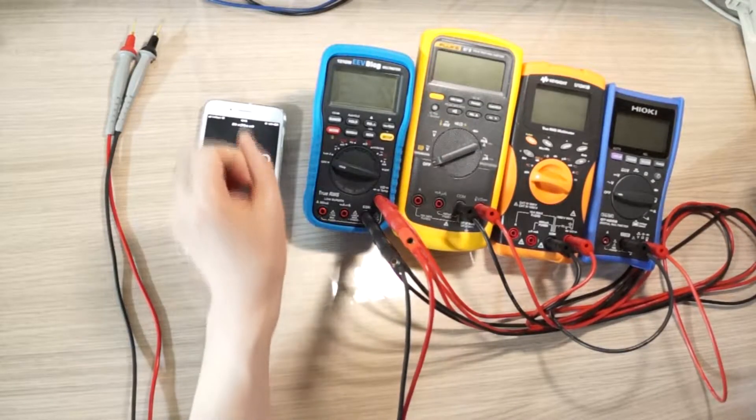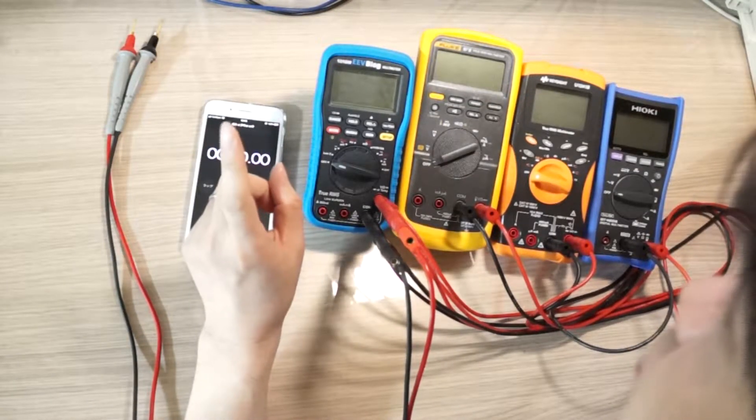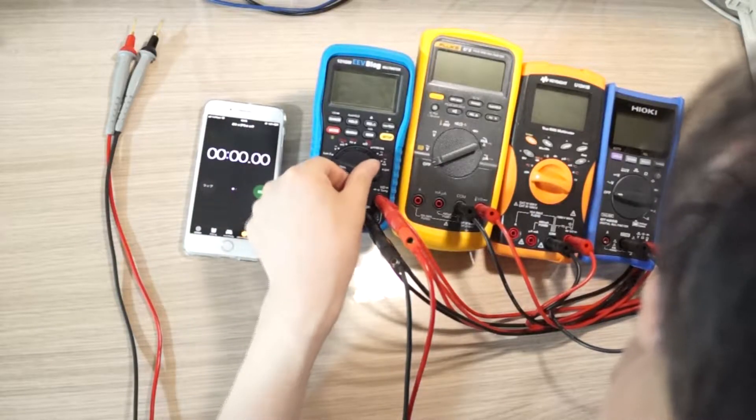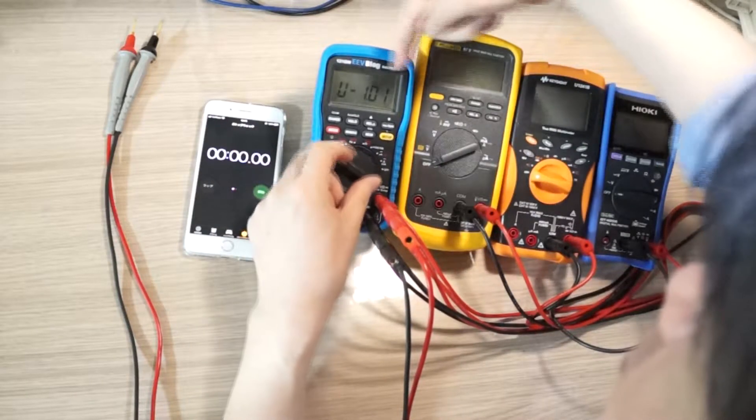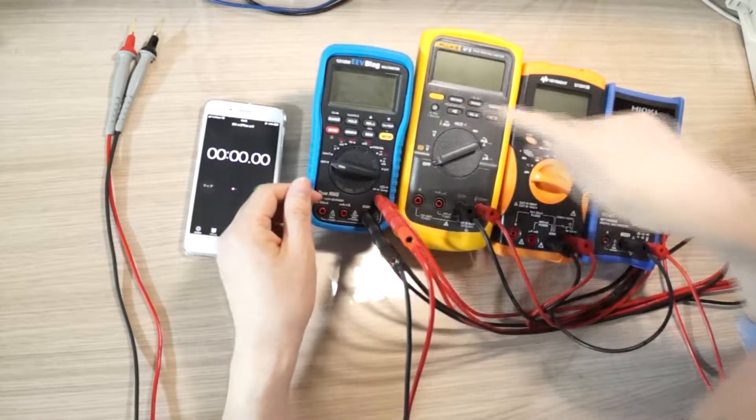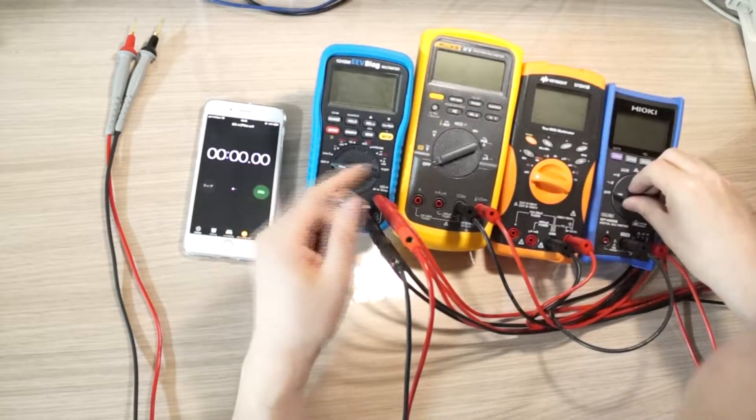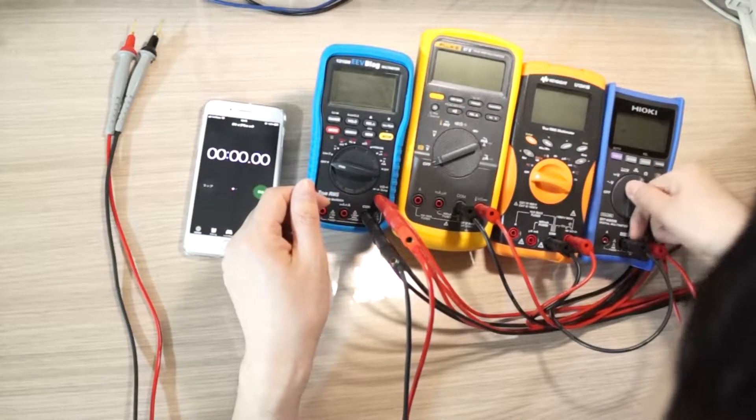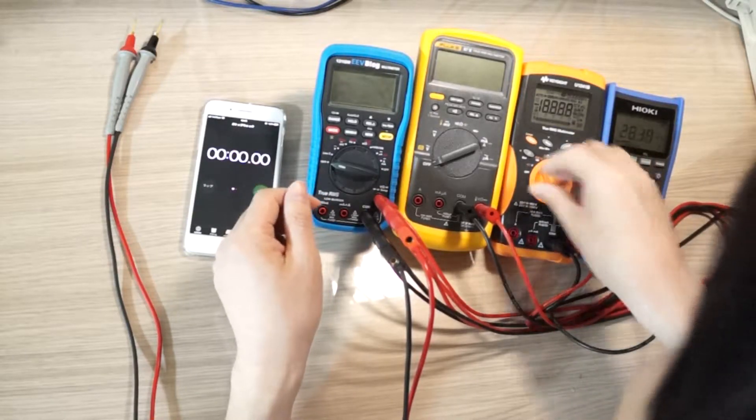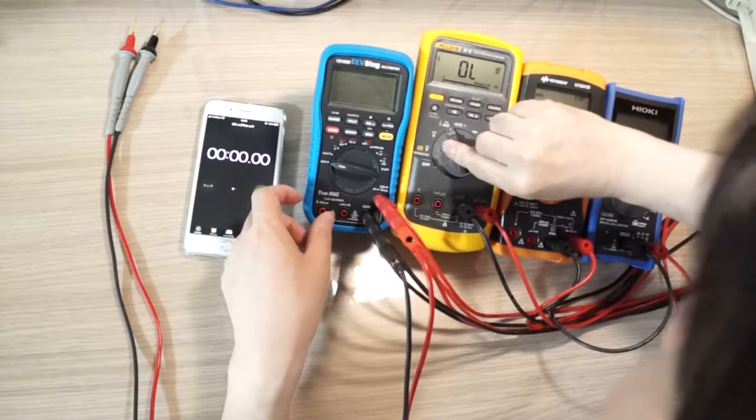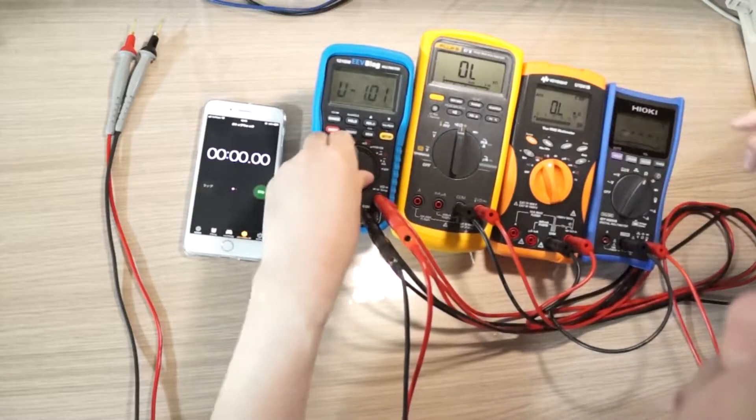Okay, before I perform the firmware update, I will measure the auto-ranging speed on version 1.01. I thought it would be good to measure in ohm mode and wait for it to go to overflow.